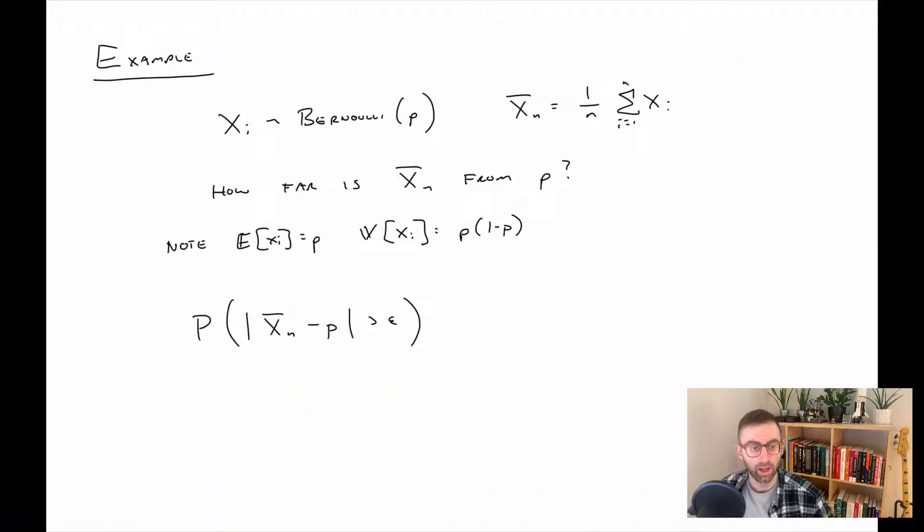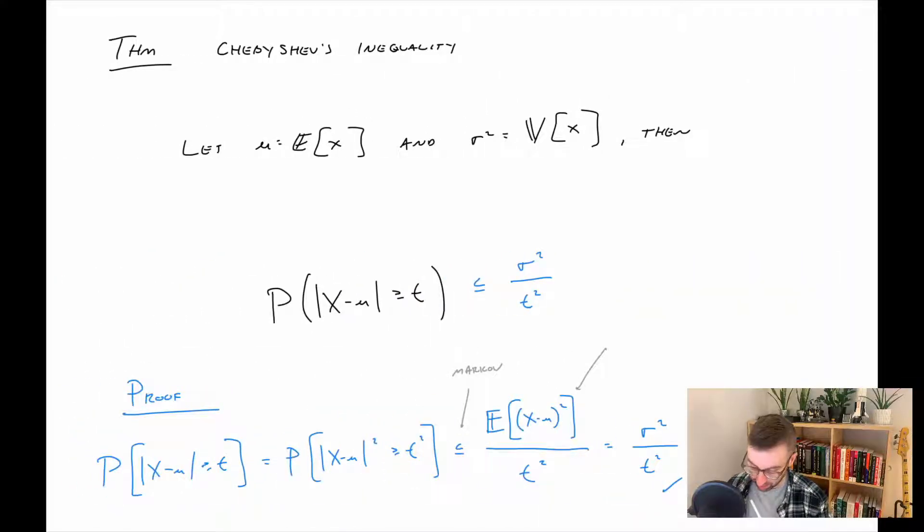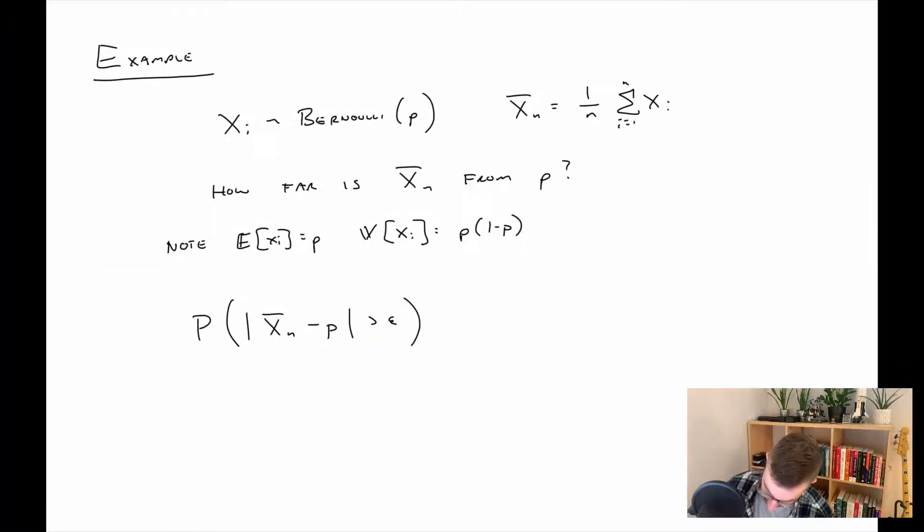So a quick example. Here we have random variables x_i that are assumed to be Bernoulli random variables with parameter p. And then we're also defining the usual sample mean. So a question we could ask ourselves is, for some sample size n, how far away is the sample mean from the true mean, in this case the parameter p. Recall that for a Bernoulli random variable, the expected value is p and the variance is p times 1 minus p. So I've rewritten that question I asked as a probability statement now. And then what we can do is just immediately apply Chebyshev's.